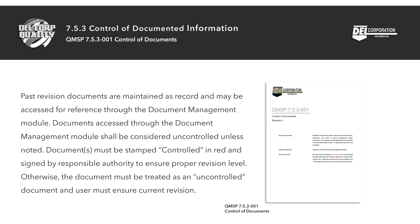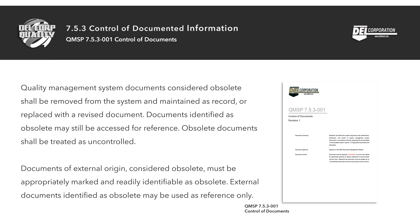Past revision documents are maintained as record and may be accessed for reference through the document management module. Documents accessed through the document management module shall be considered uncontrolled unless noted. Documents must be stamped 'controlled' in red and signed by responsible authority to ensure proper revision level; otherwise the document must be treated as an uncontrolled document and the user must ensure current revision.